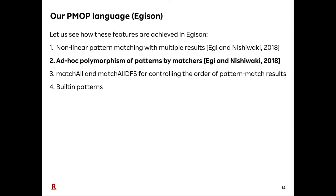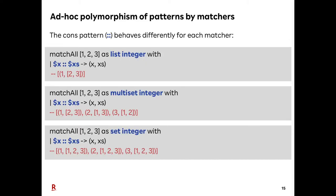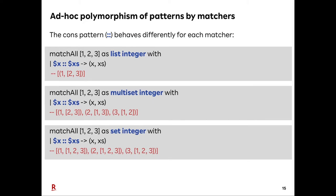Next, let me explain ad hoc polymorphism of patterns by matchers. We can change the way of interpreting patterns by changing matchers. In all these samples, the same cons pattern is used, but its meaning changes by matcher. With the list matcher, the cons pattern decomposes the list into the initial element and the rest. With the multi-set matcher, it decomposes into an element and the rest. With the set matcher, it decomposes into an element of the target list as a whole — natural if we regard each element of a set as having infinite multiplicity.